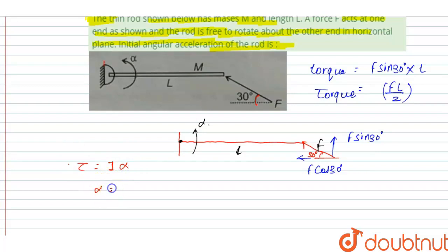Then we can write the value of alpha is equal to tau upon I and the tau is equal to F L by 2. F L by 2 and the value of I, the moment of inertia here along the one end of the rod, is equal to M L square by 3.